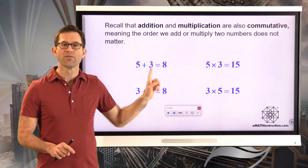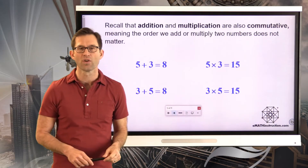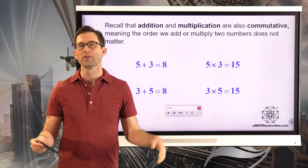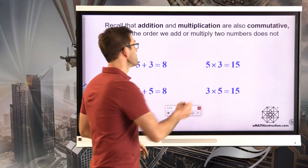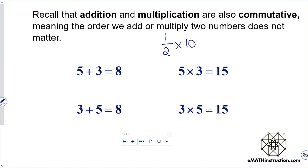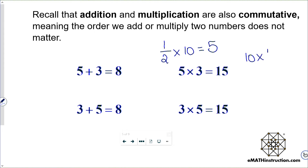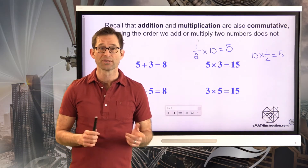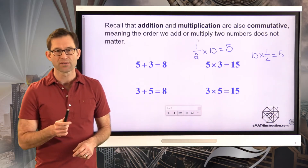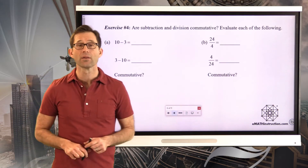This is actually a really important property to keep in mind with multiplication. You might have no issue with the fact that one-half times 10 equals 5, but the fact that 10 times one-half also equals 5 might be a little trickier to think about. And yet, multiplication is commutative — the two numbers that multiply together, it really doesn't matter which order they're in. We should ask the same question about subtraction and division: are they also commutative?